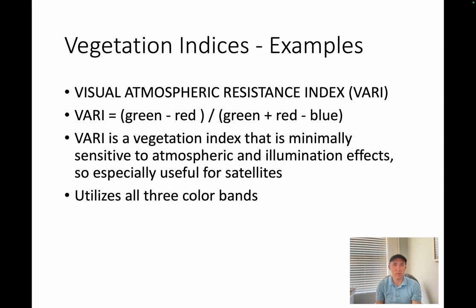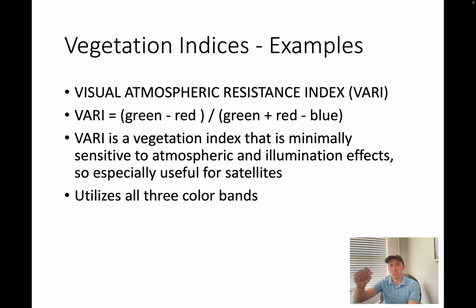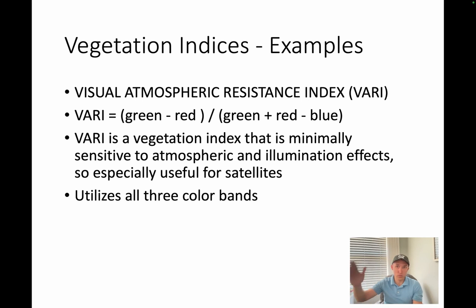One example is VARI, which is interesting because it can actually be calculated with optical data. VARI is: (green minus red) divided by (green plus red minus blue). What this means is that for each pixel in the image, we take the green reflectance value, subtract the red reflectance value, and divide by the sum of green and red reflectance minus the blue reflectance. Each band is just a raster — a matrix of numbers corresponding to reflectance — so there's no color information, just a number. We can then take that number and do these mathematical operations across the different bands for the same pixel.